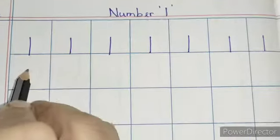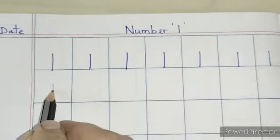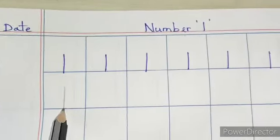Keep your pencil at the center of the square. Come down straight, touch the bottom line is number 1.